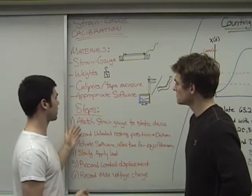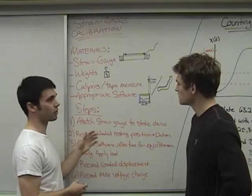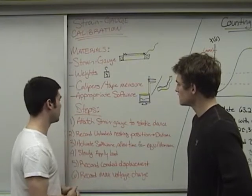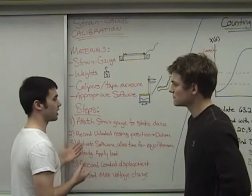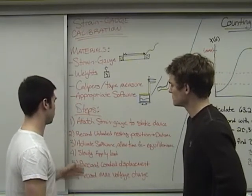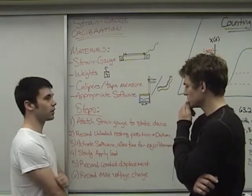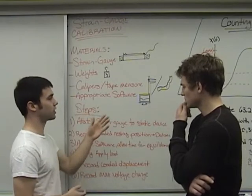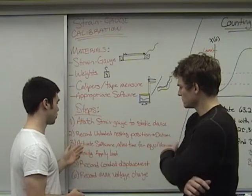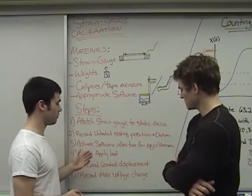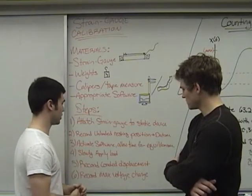So the first step we're going to take is to attach our strain gauge to a static device in order to hold it there when we apply weight to it. We're then going to record the unloaded resting position and use this as our datum for the rest of the testing. Then we'll turn on the software and allow time for equilibrium to occur within the voltage that the strain gauge is outputting. And we'll slowly apply our loads and record the displacement and the maximum voltage change that appears with these loads.